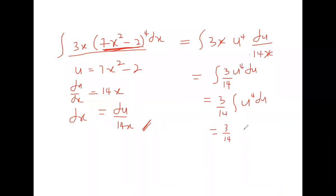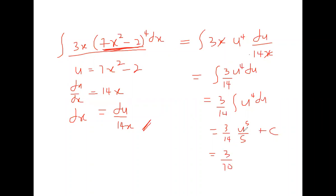That gives us (3/70)u⁵ + C, then replace u with 7x²−2: the final answer is (3/70)·(7x²−2)⁵ + C. You can take it from here — it's just a matter of replacing your u. That is the final answer.